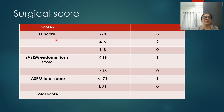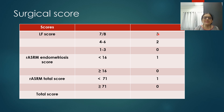For the surgical scoring of EFI: if the Least Function Score is 7–8, the points given are 3; if 4–6, points are 2; if 1–3, points are 0. For the ASRM endometriosis score: if less than 16, score is 1; if greater than or equal to 16, score is 0. For the total ASRM score: if less than 71 out of 150, score is 1; if greater than or equal to 71, score is 0. Maximum surgical score is 5.